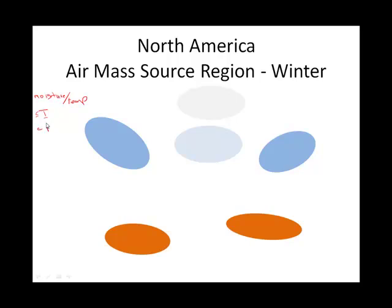Then we have maritime tropical air masses — maritime meaning moist and tropical meaning warm. And then we have maritime polar air masses — maritime meaning moist, polar meaning cold. And the last one is continental arctic: continental meaning dry, arctic meaning very cold.